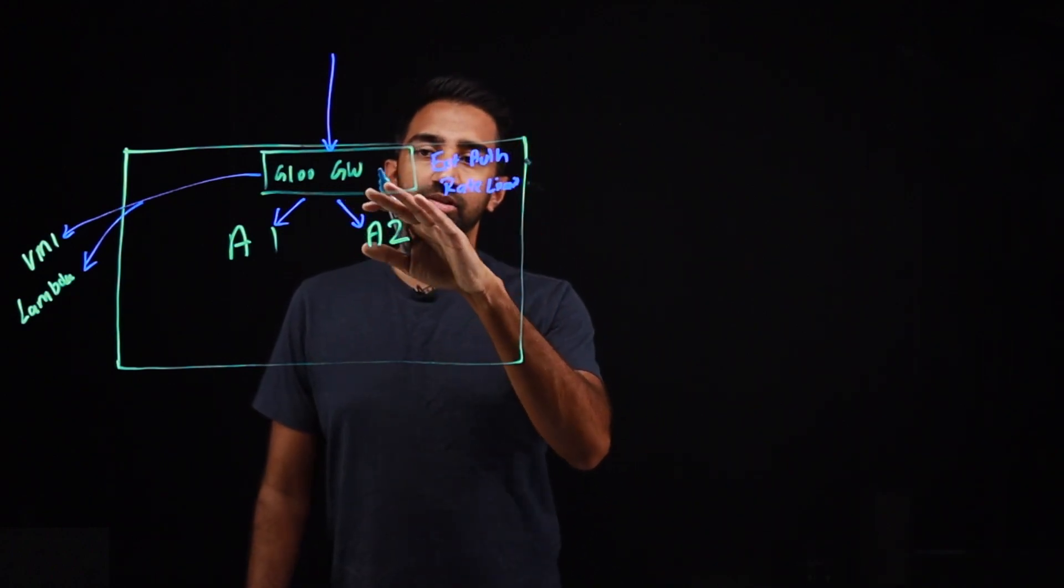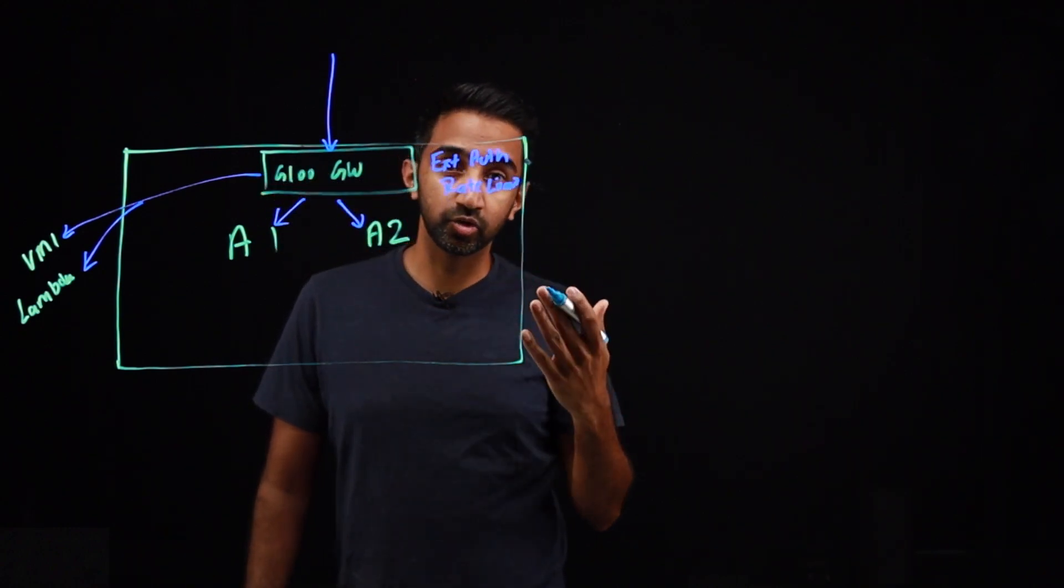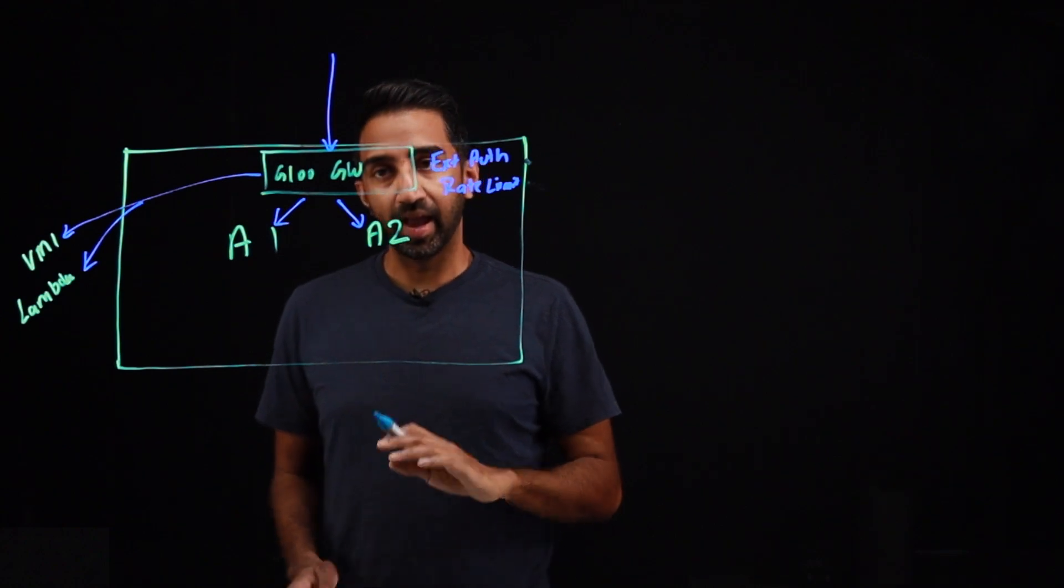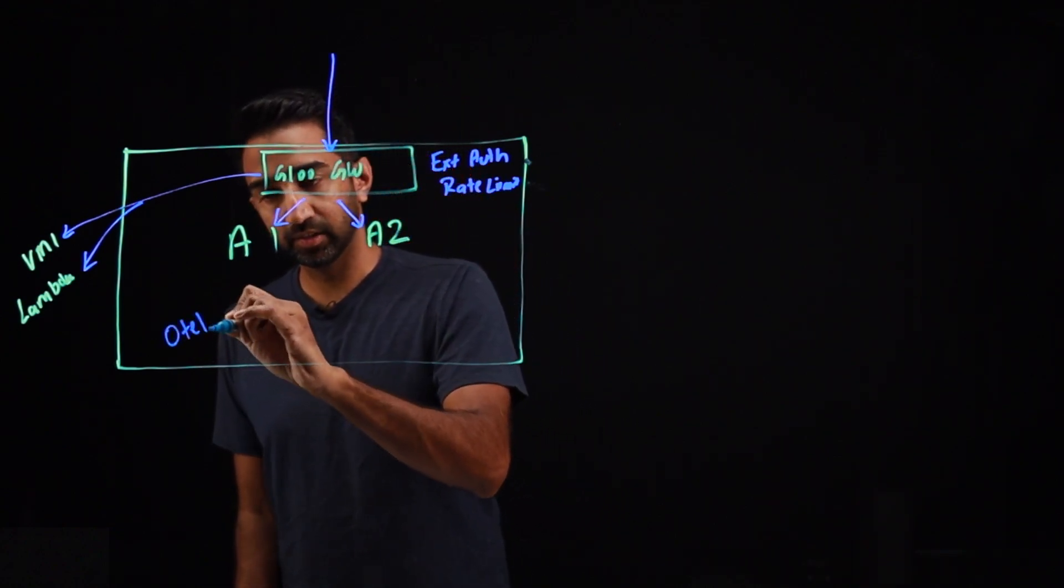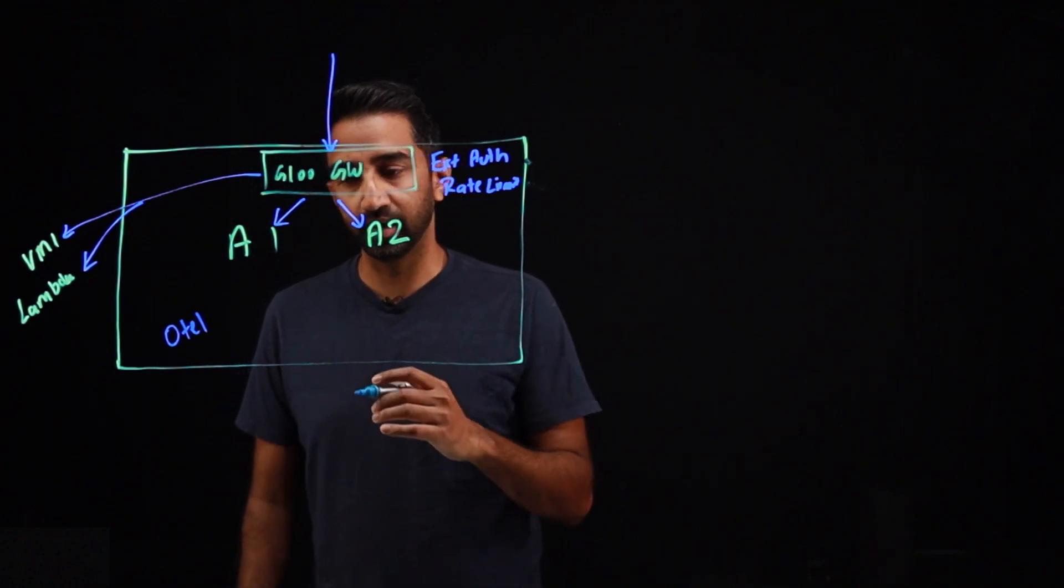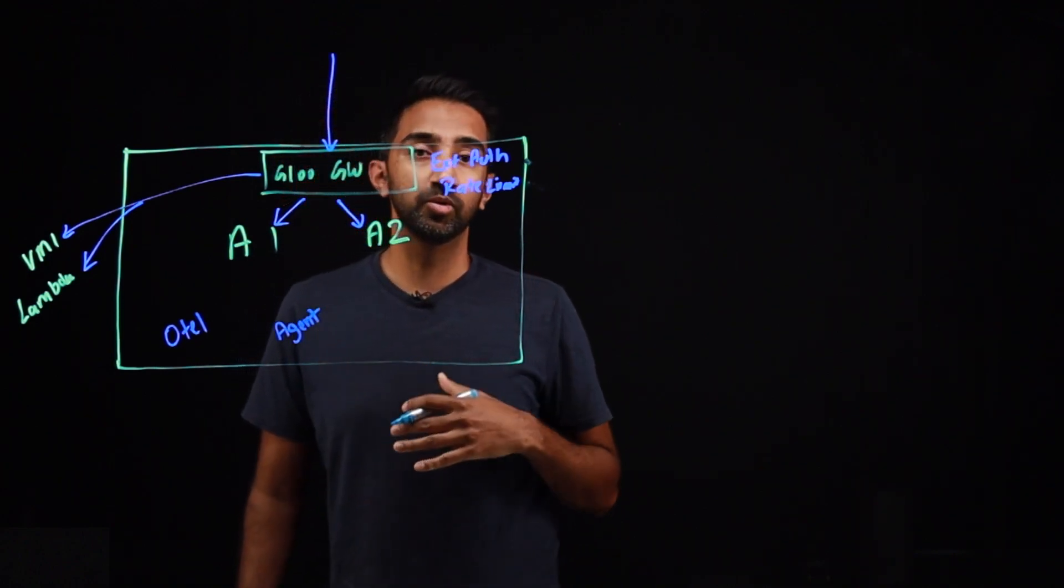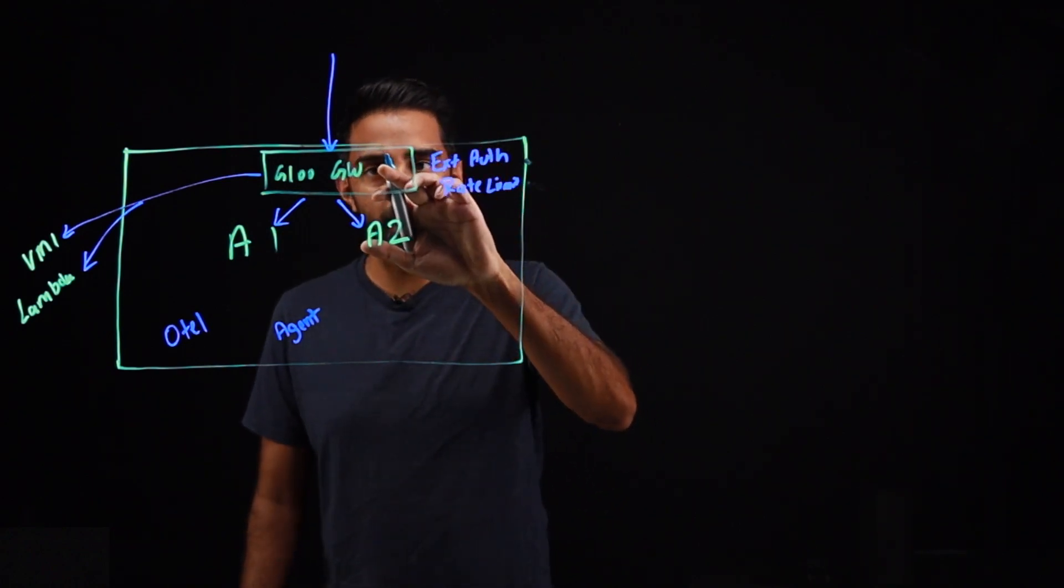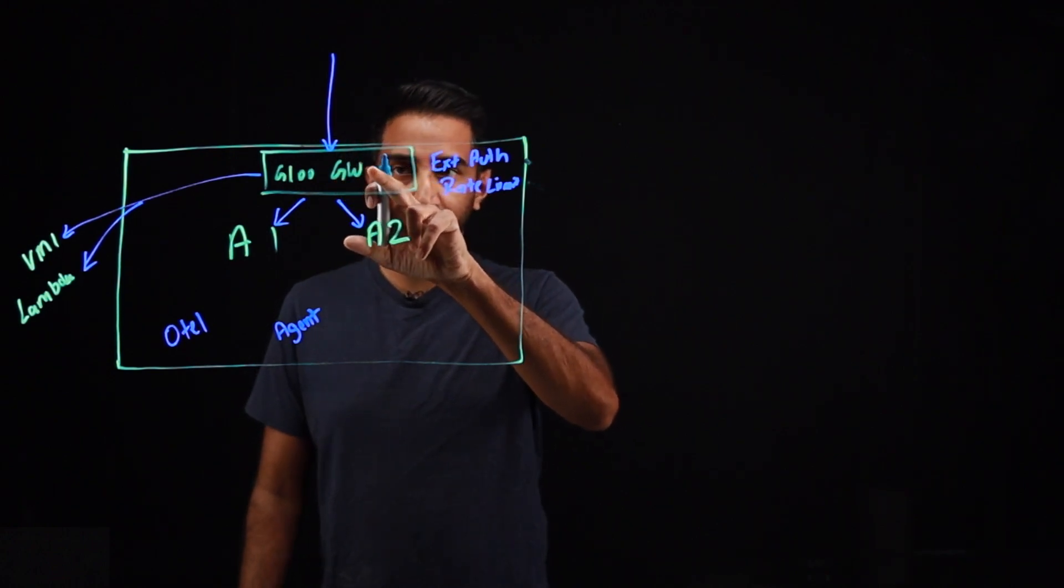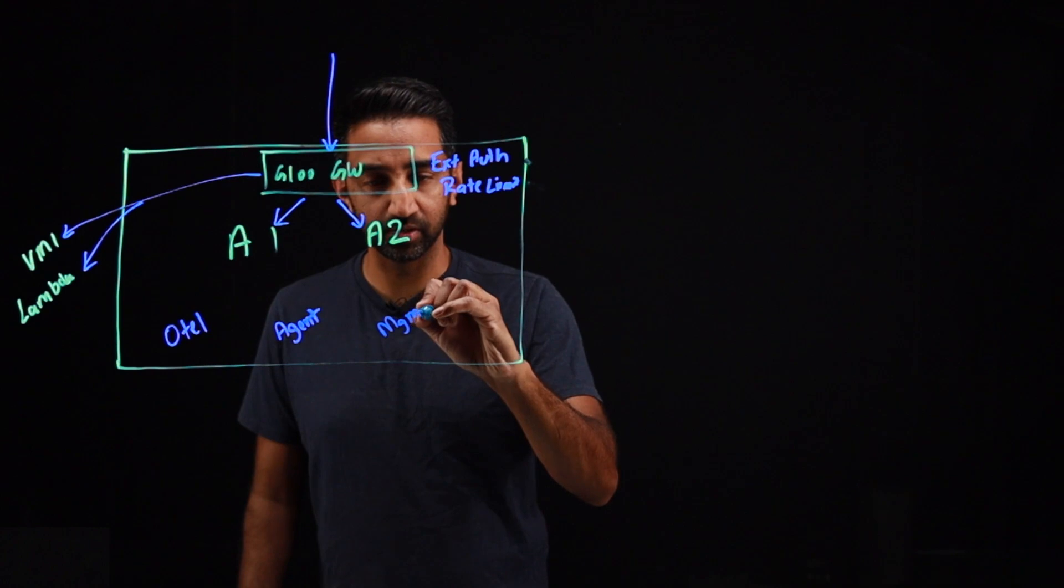To manage, to control this Glue Gateway, you need a control plane and a management plane. And Glue Gateway comes with an OTEL collector to collect all your telemetry data. It comes with an agent, which is responsible for communicating with the control plane, therefore communicating with the data plane, which is Envoy, that is running as your Glue Gateway. And then it comes with this management server.